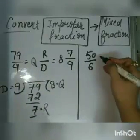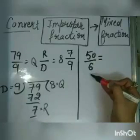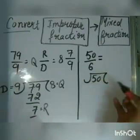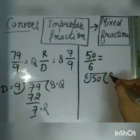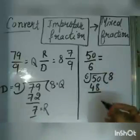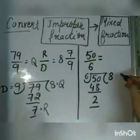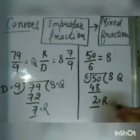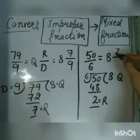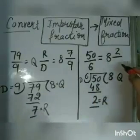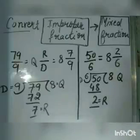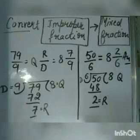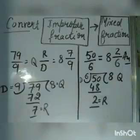Let us attempt another one: 50 upon 6. This is an improper fraction. Divide the numerator 50 by the denominator 6. 6 times 8 is 48, so the quotient is 8 and the remainder is 2. The quotient becomes the whole number, the remainder becomes the numerator, and the divisor becomes the denominator of the mixed fraction. So we get 8 and 2 upon 6. You can verify: 8 times 6 is 48, plus 2 gives 50 upon 6. This is the way to convert an improper fraction into a mixed fraction. Thank you.